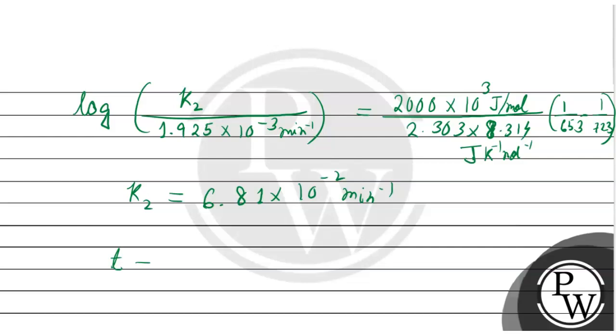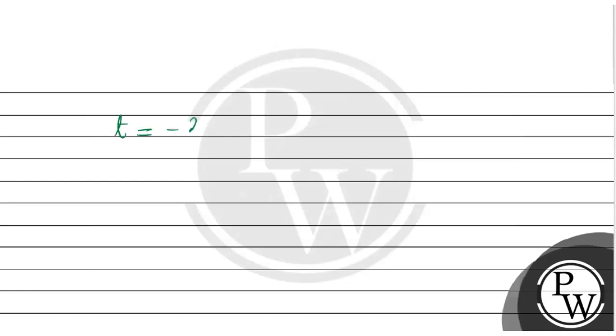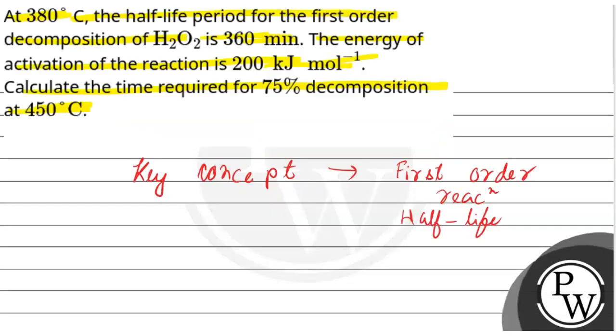Time will be equal to 2.303 divided by K into log of A by A0, final concentration by initial concentration. So this is 2.303 divided by 6.81 into 10 raised to the power minus 2, log of 25 divided by 100, which will give us 20.4 minutes as our required answer. 20.4 minutes will be required for the decomposition of 75 percent. I hope you understood, thank you.